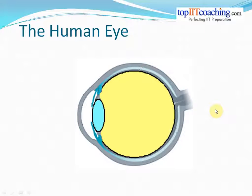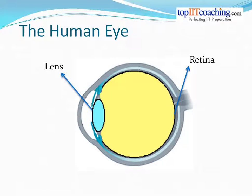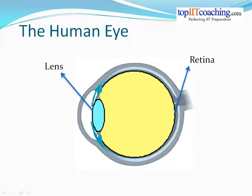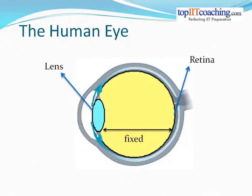The first thing we will study is the human eye. The eye actually consists of a lens and a retina. These constitute the part of the eye which help us see. The lens of the eye is called the cornea and it's a convex lens. One interesting fact about the human eye is that the distance between the lens and the back part of the eye called the retina is fixed. And wherever an object is placed, when it gets refracted through the eye lens, its image is always formed on the retina. So the image distance is fixed in case of a human eye.